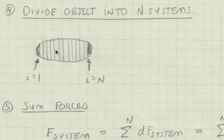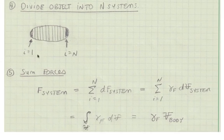Step 4 is to conceptualize the body as being comprised of n systems, as shown here. Step 5 is to sum forces. Notice in the limit, as we make our systems differential, the summation turns into the integral.